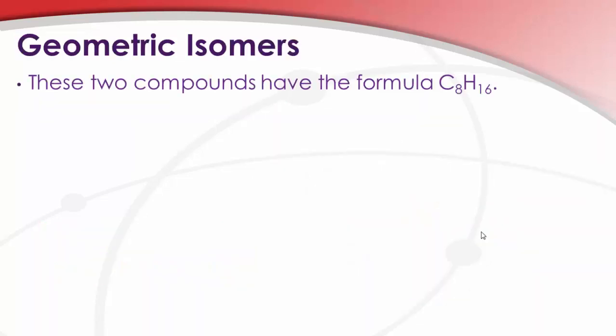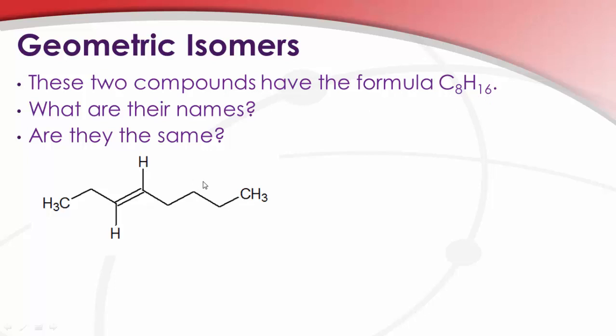So let's go back to geometric isomers then. Here are two compounds, both having the formula C8H16. And we might be asked, what are their names and are they the same? Based on what we know so far, we can go ahead and name these. Two, four, six, eight. So these would be octene. One, two, three. So these would be 3-octene by my count on the left-hand side. And this one, two, four, six, eight. Again, octene, 3-octene. So they're both 3-octene, but they're not the same compound.